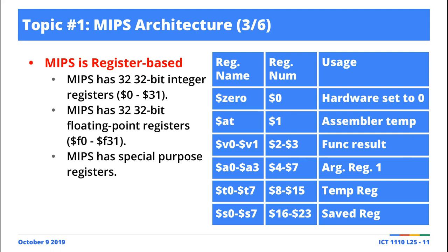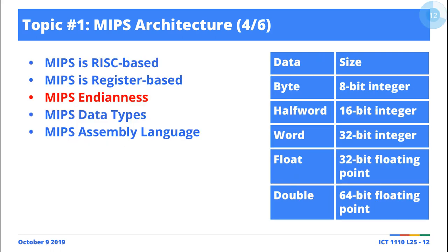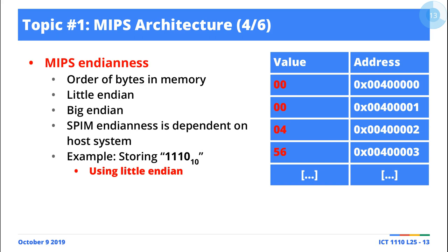This is, in fact, register number eight. Go figure. And then in terms of Endianness here, what we mean by Endianness is essentially the way in which the bytes are ordered in memory. So it's either you order the data from the least significant bit to the most significant bit, or from the most significant bit to the least significant bit, relative to the lowest memory address.